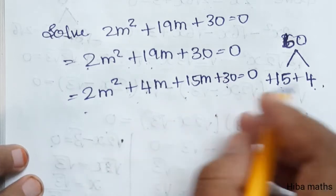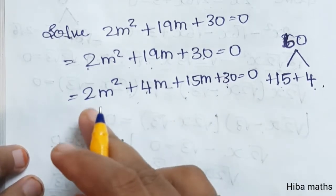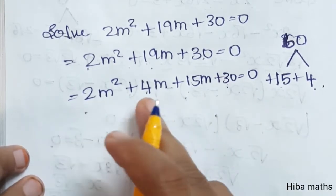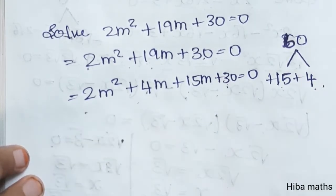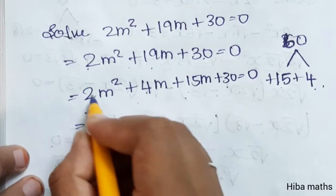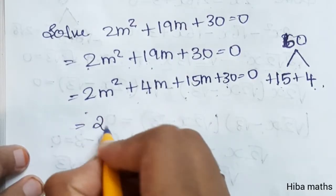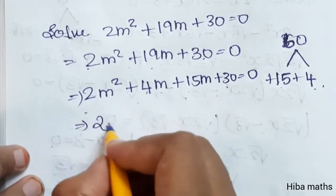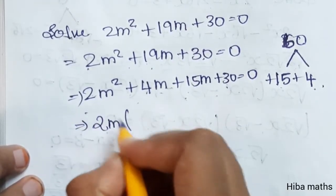If you have 2 in the front, 2m is common. Taking 2m as the common factor from the first two terms.